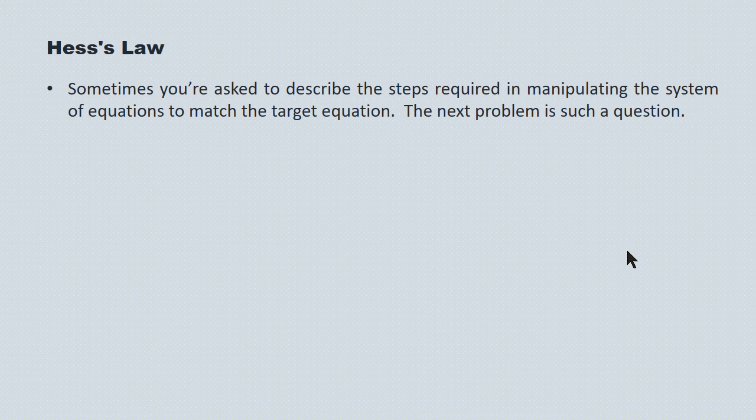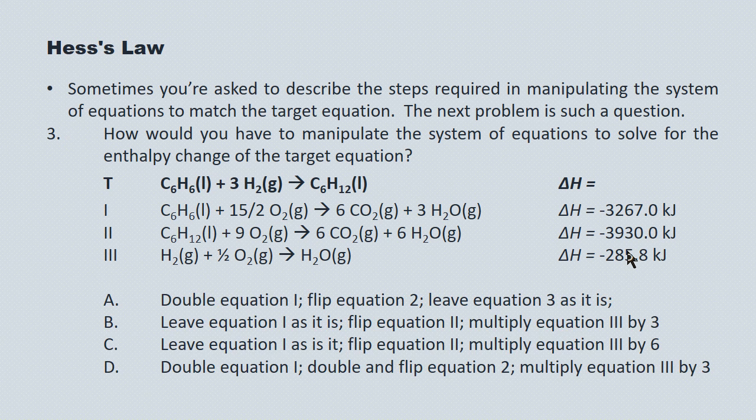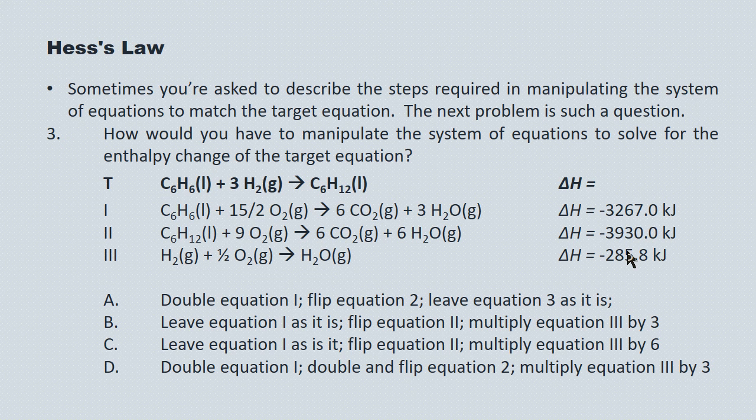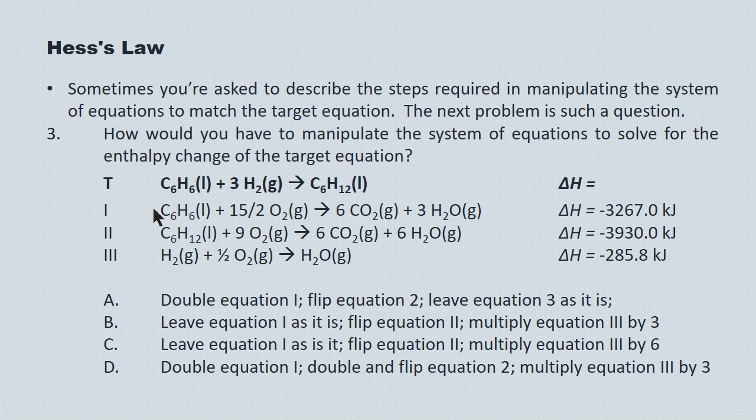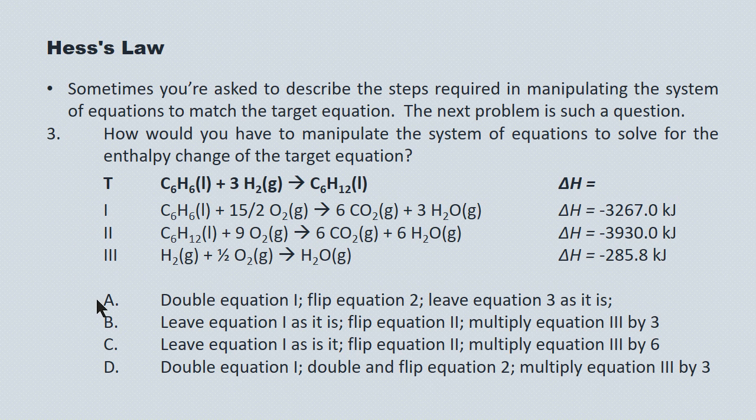More recently on the diploma, they're asking you questions of this sort. They give you a target, they give you a system of equations, and they don't ask you to manipulate the equations. They ask you how you would manipulate the equations. So those are the four choices here. Let's see if we can narrow down these choices and solve the answer. You see that the C6H6 is only supplied by equation 1. And that the target consumes one mole, and so does equation 1. So you want to leave equation 1 alone. Immediately we can eliminate choice A and choice D.